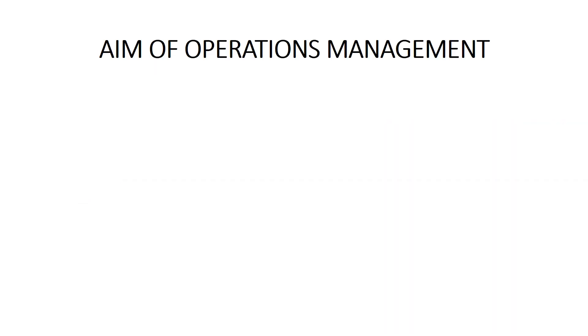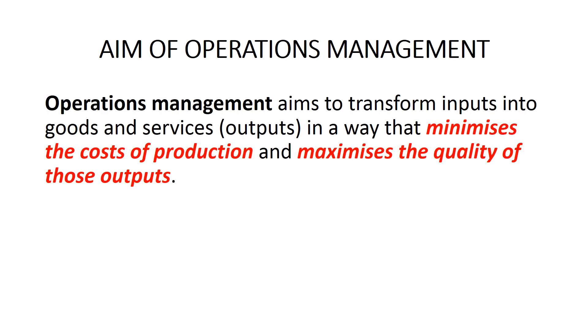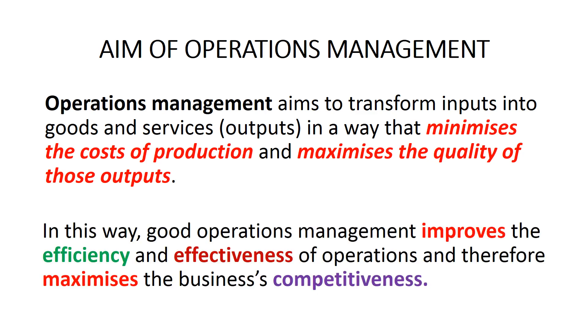You'll recall that operations management is the management of resources and functions within a business — that is, the management of the operations system to transform inputs into goods and services or outputs in a way that minimizes the costs of production and maximizes the quality of those outputs. Accordingly, the aim of operations management is to optimize the operations of the business.